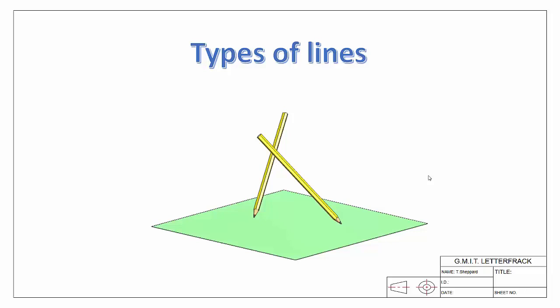The three different types of lines we're going to be dealing with are parallel lines, intersecting lines, and skew lines. We're going to take each one individually and look at examples of each.